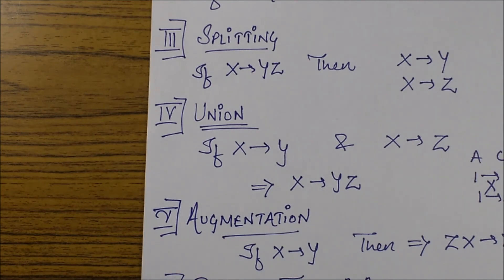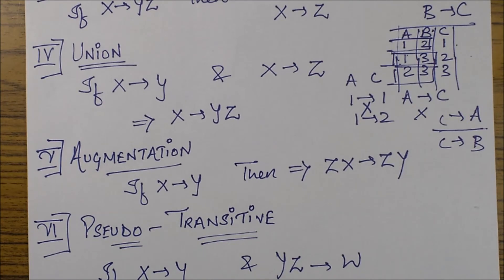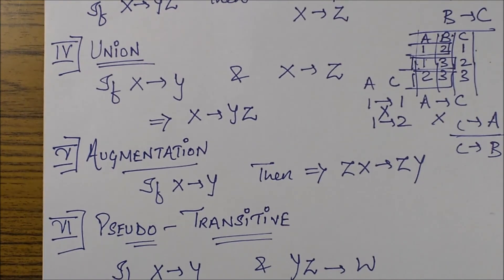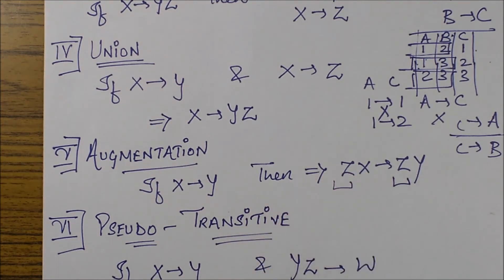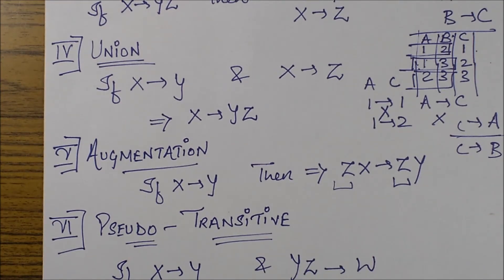Next is the augmentation property. What does augmentation state? Augmentation is if I've been given X goes to Y, then I can augment an extra attribute on both sides of this dependency. I can say that ZX goes to ZY. This may be required when I am trying to derive some other dependency wherein I require this ZX attribute on left hand side.